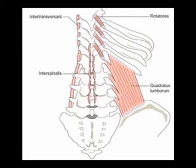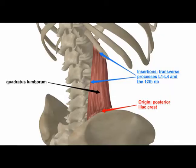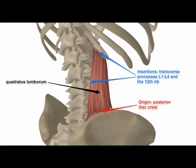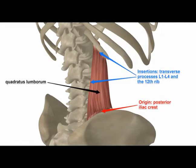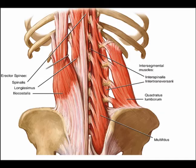The deep layer consists of the interspinalis muscles and the intertransverse serii. Also, the quadratus lumborum is classified as a deep spinal muscle.